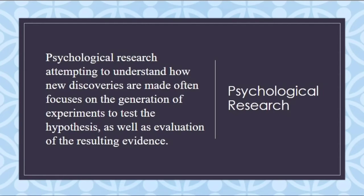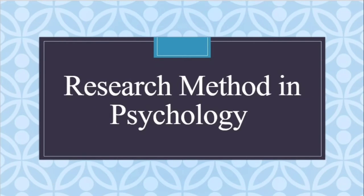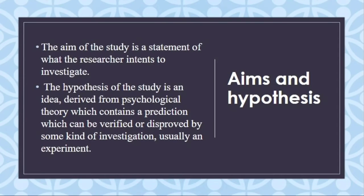Now we will see how many research methods there are in psychology, one by one. Don't skip the video if you want to get full benefit. First: Aims and Hypotheses. The aim of the study is a statement of what a researcher intends to investigate. The aim is our initial step — what we want to know about.